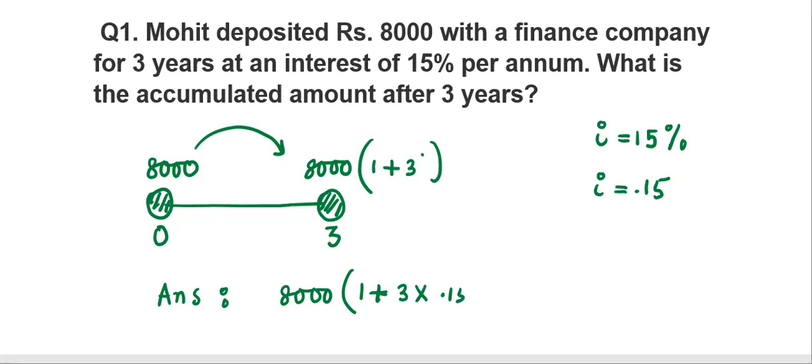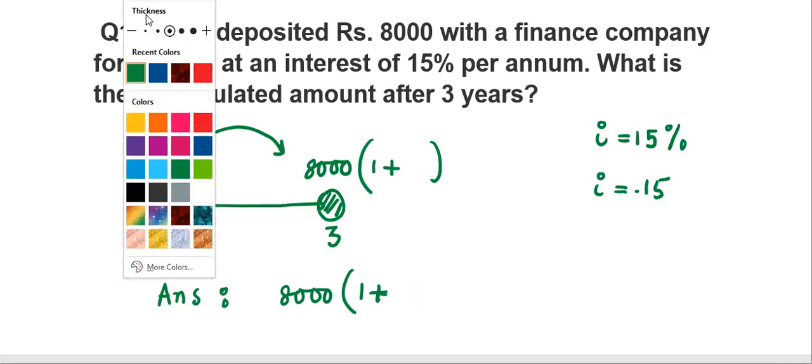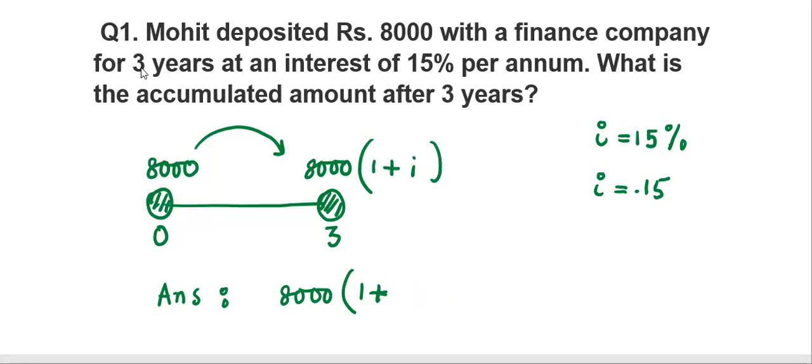Sorry, this is compound interest. We will write it 8000 times (1 plus i) to the power 3, which is (1.15) to the power 3. You can use a calculator and find its value. You can check that it equals 12,167.